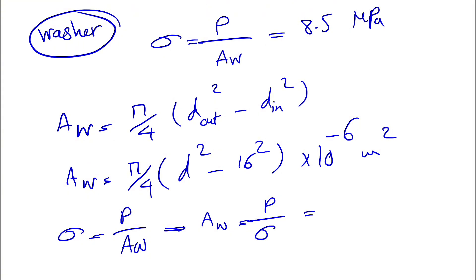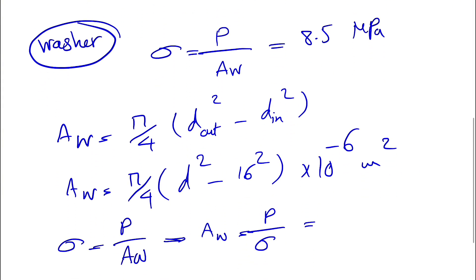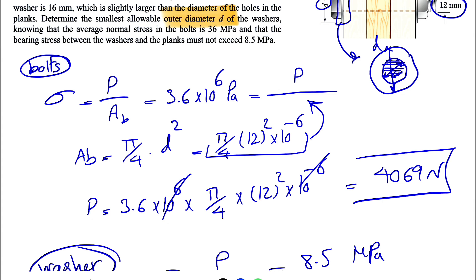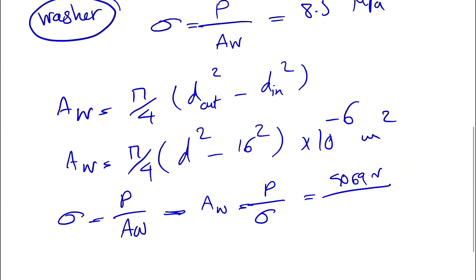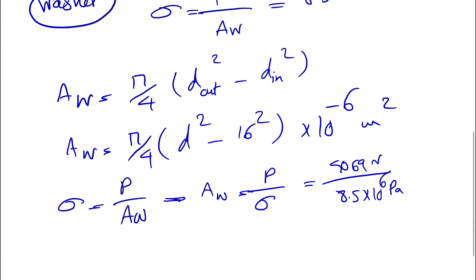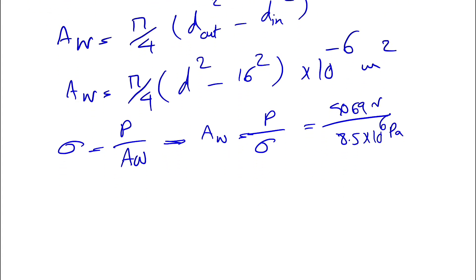We found P in the previous step, which was 4069 newtons, divided by 8.5 times 10 to the 6 pascals, or 8.5 megapascals. We know from the question that the stress between washer and planks cannot exceed 8.5. The area that we have is what we found from the previous step: pi divided by 4 times d squared minus 16 squared times 10 to the minus 6.